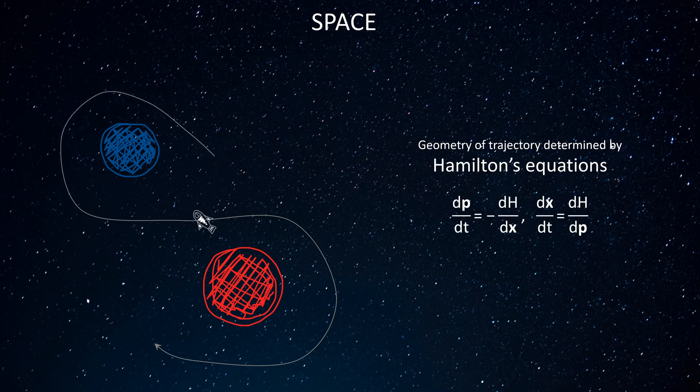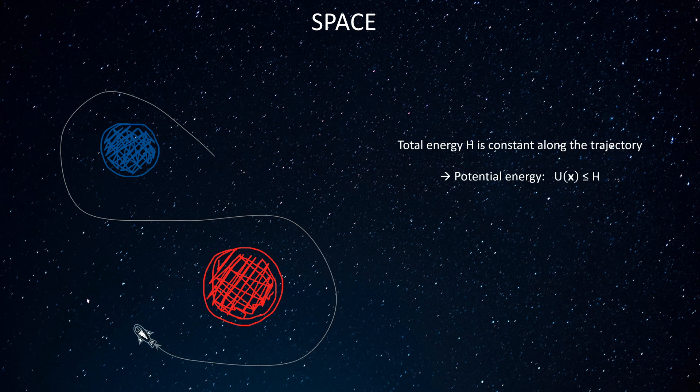The geometry of the trajectory is completely determined by Hamilton's equations from classical mechanics. The total energy h is constant — it is preserved all along the trajectory — which implies that the potential energy u is bounded above by h.